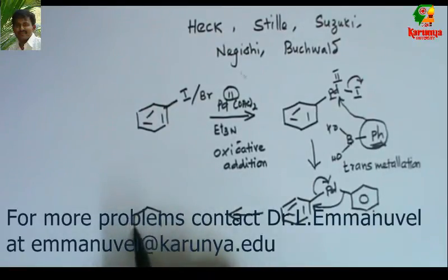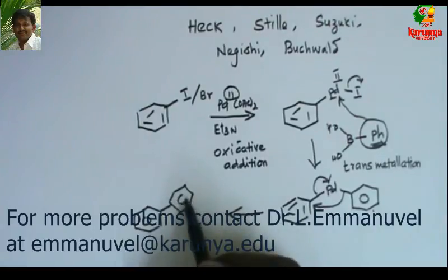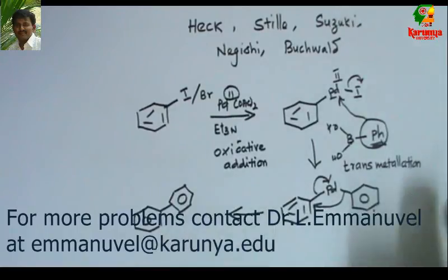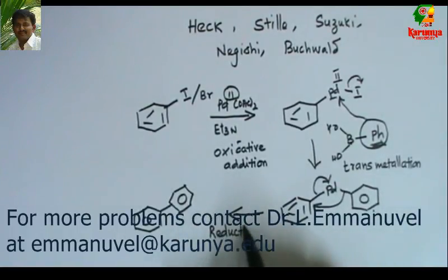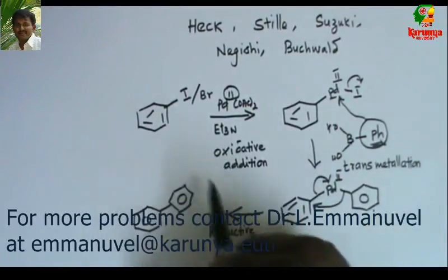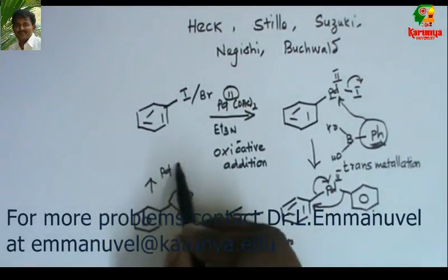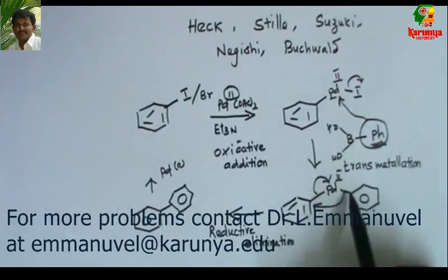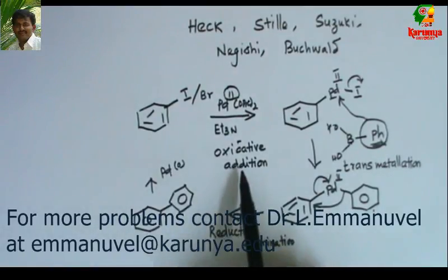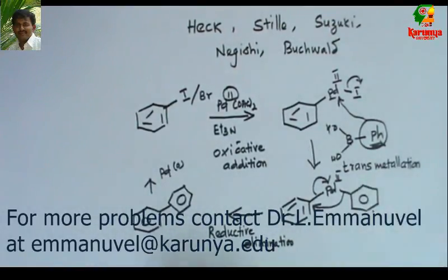The two groups then migrate together and palladium returns to the zero oxidation state, giving the coupled product — in this example, biphenyl. The last step is called reductive elimination, because palladium(II) is getting reduced to palladium(0), and the two carbon groups are eliminated to give the product. So there are three steps: first, oxidative addition; second, transmetallation; third, reductive elimination. Thank you for watching. Have a nice day.